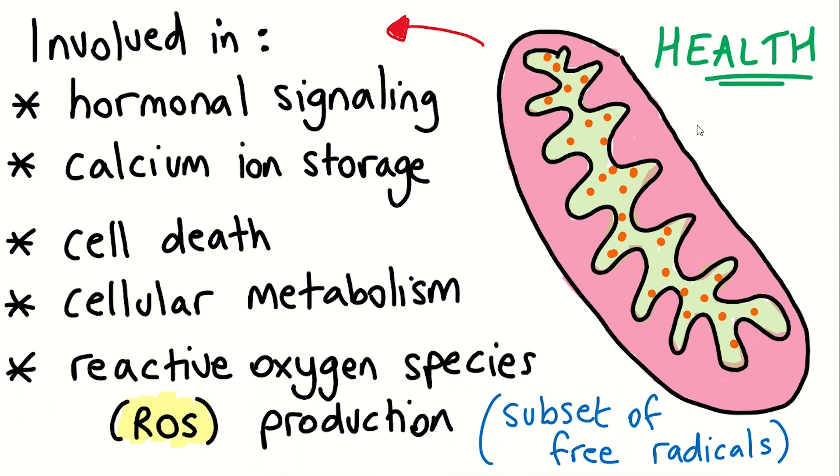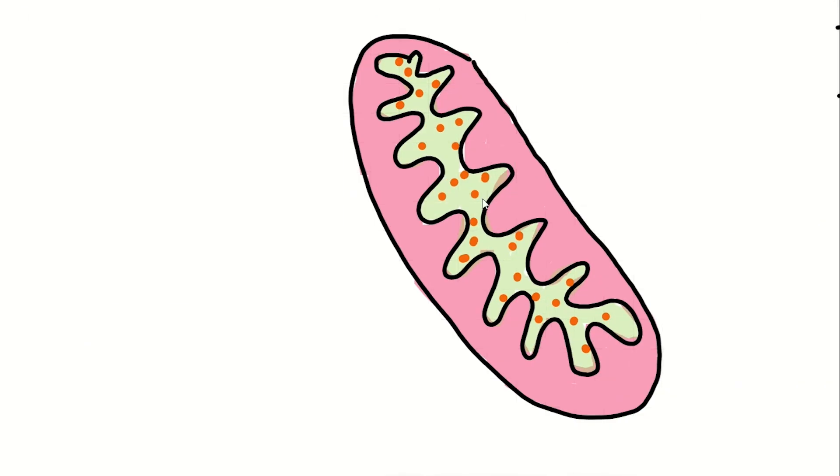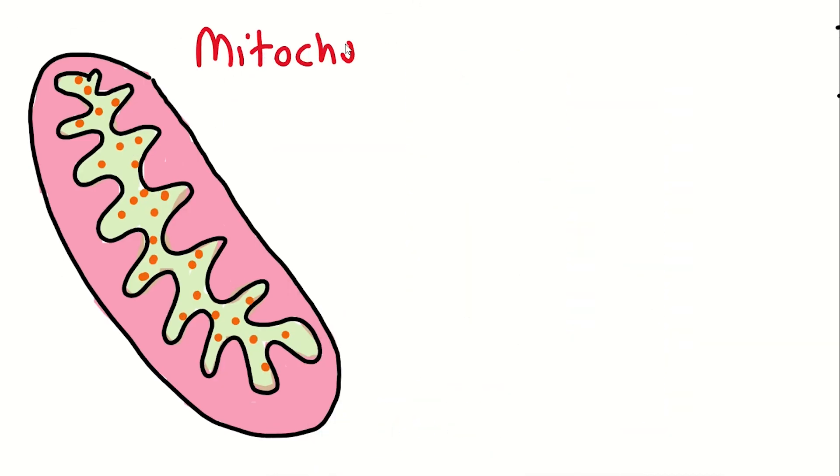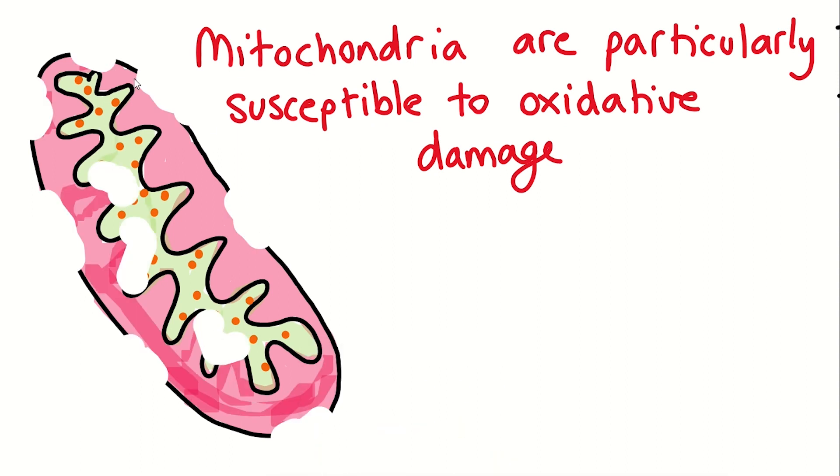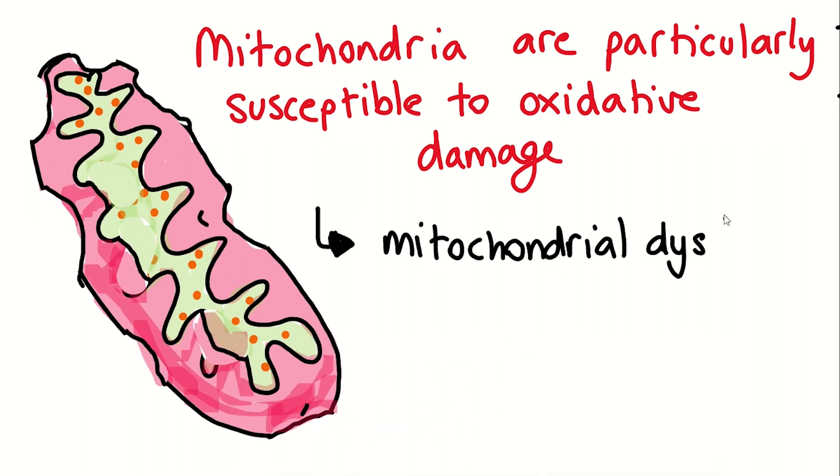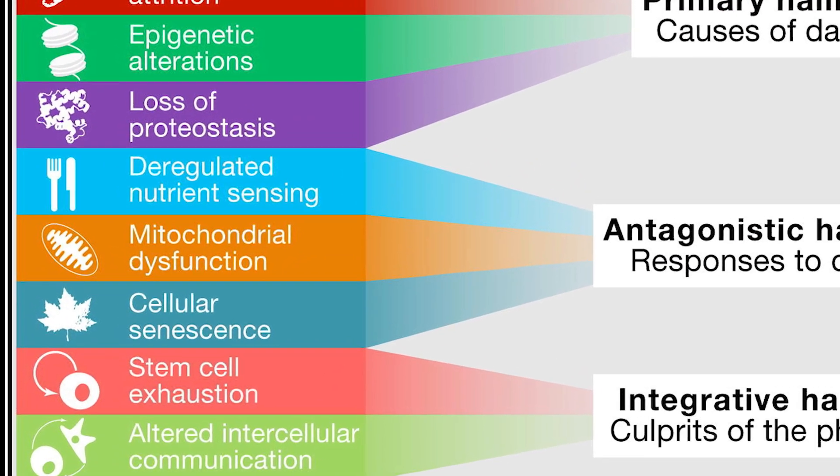Unfortunately, due to its actions, mitochondria are particularly susceptible to oxidative damage. It is thought that this oxidative damage causes decline in mitochondrial function with age, with mitochondrial dysfunction being considered one of the hallmarks of ageing.